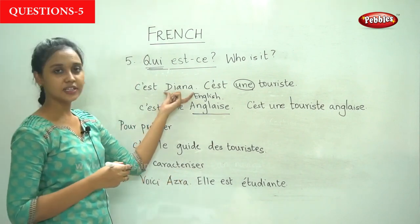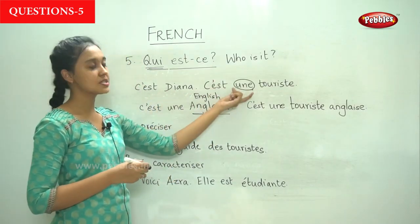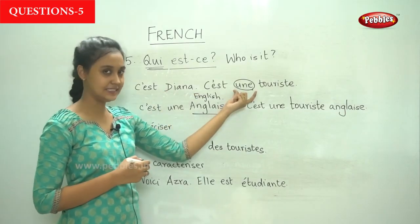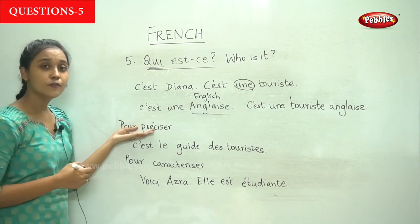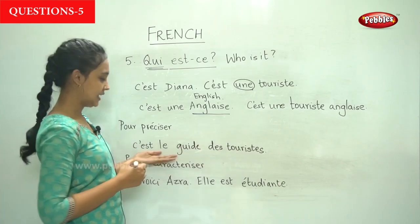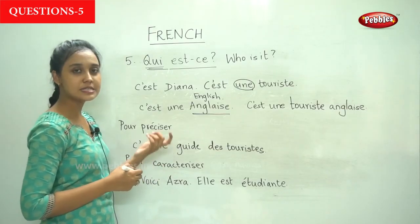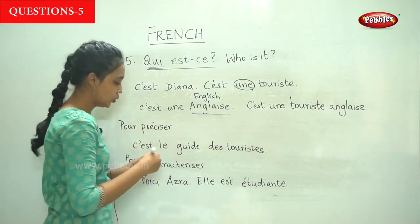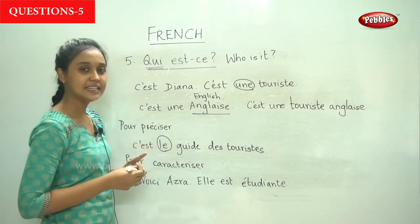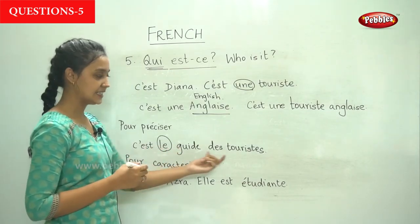Since the noun here is feminine, we use 'une.' If it is masculine we use 'un,' and if it is plural we use 'des.' For a more precise answer, we use the definite article — 'C'est le guide du touriste,' meaning 'He is the tourist guide.' Since we are referring to someone in particular, we say 'le,' which is a definite article for masculine nouns.